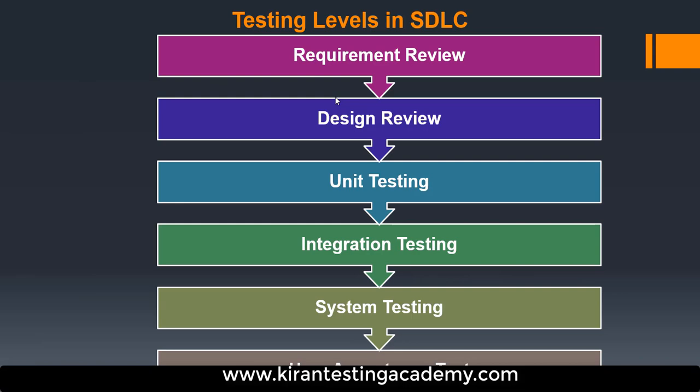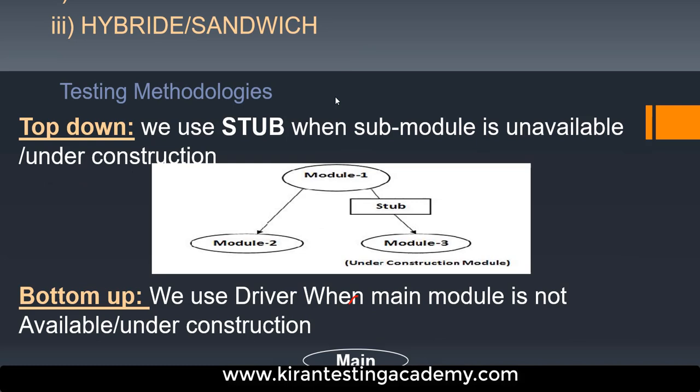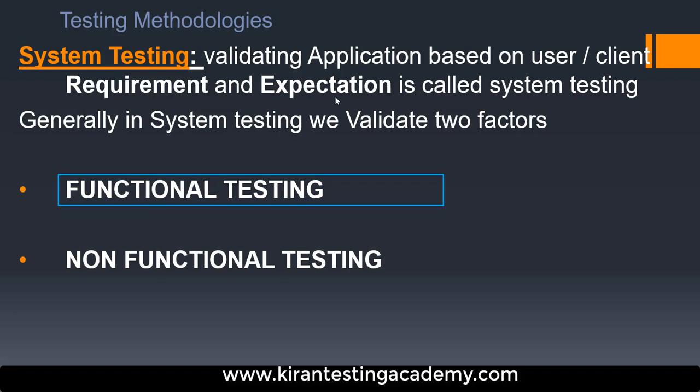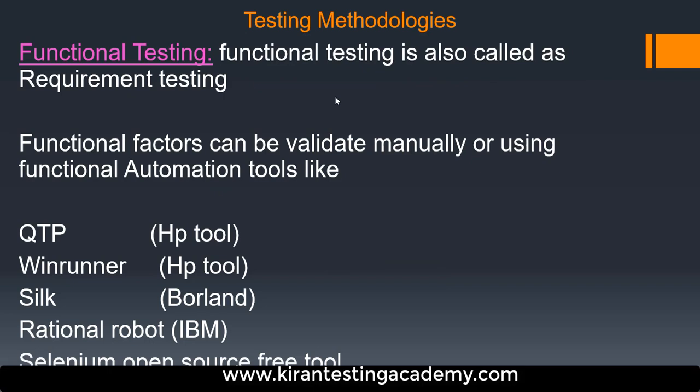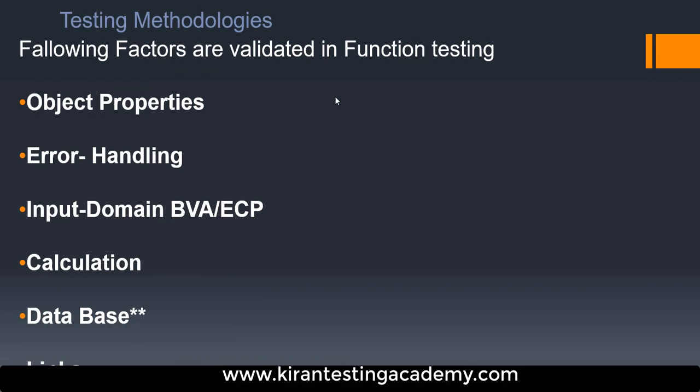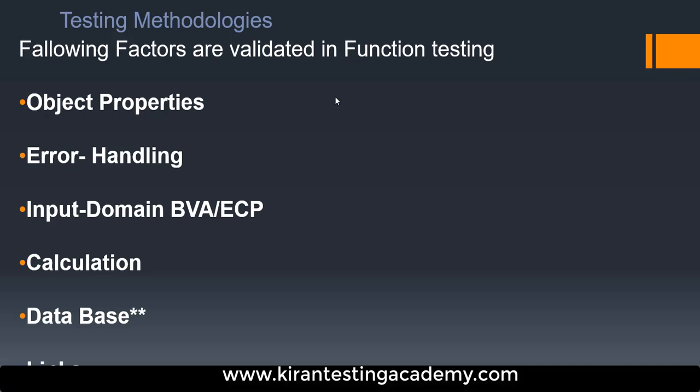We have two types of testing under system testing: functional and non-functional. Functional testing is testing the behavior of an application — it can be done manually or using tools like Selenium, QTP, or WinRunner. Factors in functional testing include object properties, error handling, input domain (testing fields like name or age using BVA/ECP), calculations, database testing, and links testing.